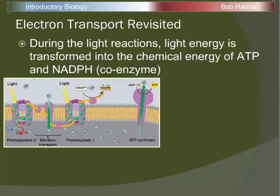Putting it all together: Photosystem II absorbs light, passes down a chain working these pumps to pump H⁺ across the membrane. Eventually when those H⁺ rush back through the ATP synthase — our turbine, our hole in the dam — it's going to generate ATP. Eventually that electron gets passed to the next chlorophyll, gets excited by light, passed on a different electron transport chain in Photosystem I, and that energy gets stored in the coenzyme NADPH.